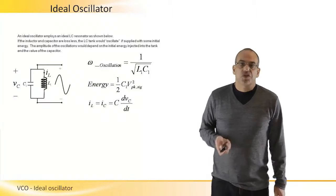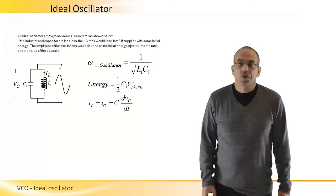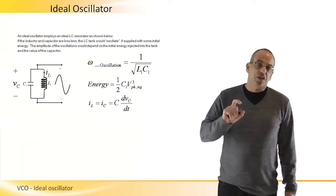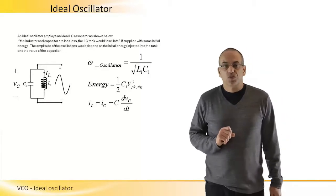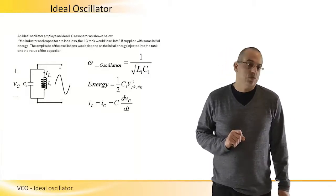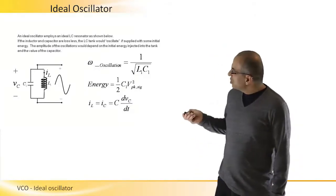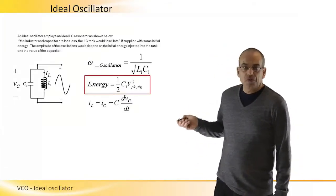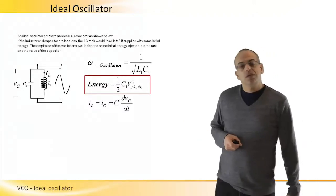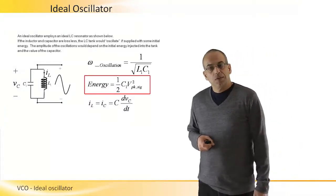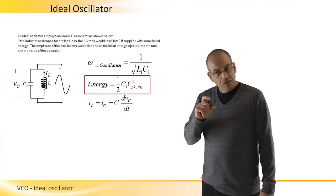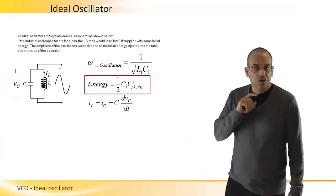And the amplitude of these oscillations will depend on the initial energy that was supplied to the capacitor, to the tank. The energy will be measured by half the capacitance times the peak voltage oscillation squared.